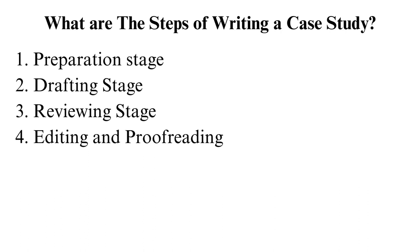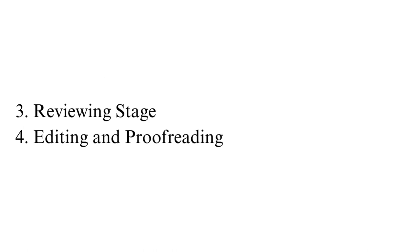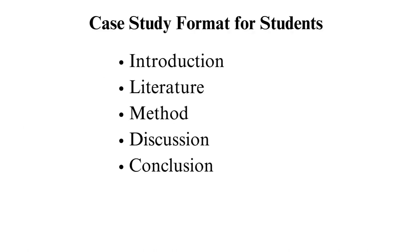Case study format for students: according to the University of California Social Science Research Guides, a case study should have five sections — introduction, literature review, method, discussion, and conclusion. Like in any research paper, the introduction should explain the report's content to the reader, answering questions such as: what is being studied, why is the topic important to investigate, and what is the background information of the study.